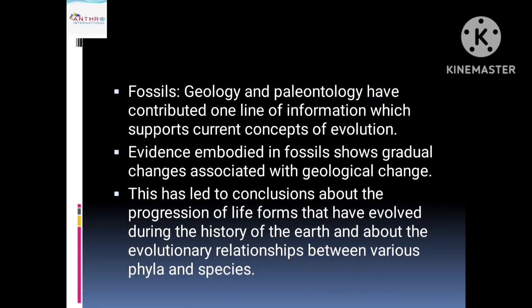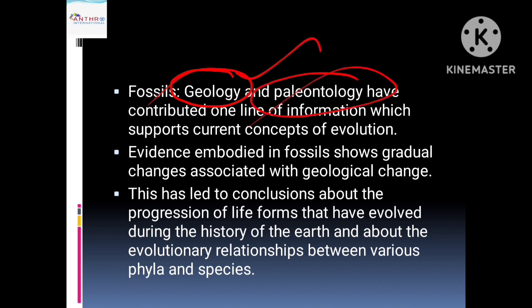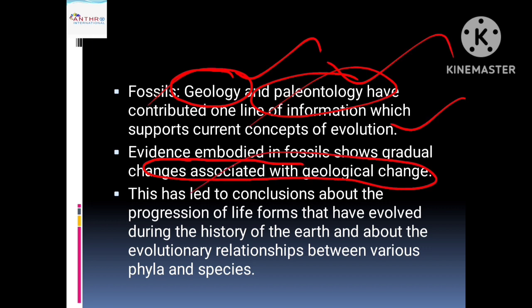Darwin's principles are five principles. Darwin explains that geological changes, along with the life of this earth, also slowly or gradually change. Geology means the study of earth; paleontology means the study of fossils. When he studied the earth, he got evidence supporting the principle of gradual change. Evidences embodied in fossils show gradual changes associated with geological change.